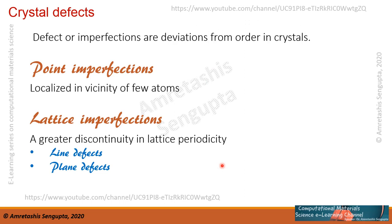Crystal defects are basically deviations or imperfections from a perfect order in crystals. They can be classified into point imperfections, which are localized in the vicinity of a few atoms, and lattice imperfections, where a greater discontinuity exists in lattice periodicity on a much larger scale. Among lattice imperfections, you can consider line defects, which are along a line, and plane defects, which are along a plane.